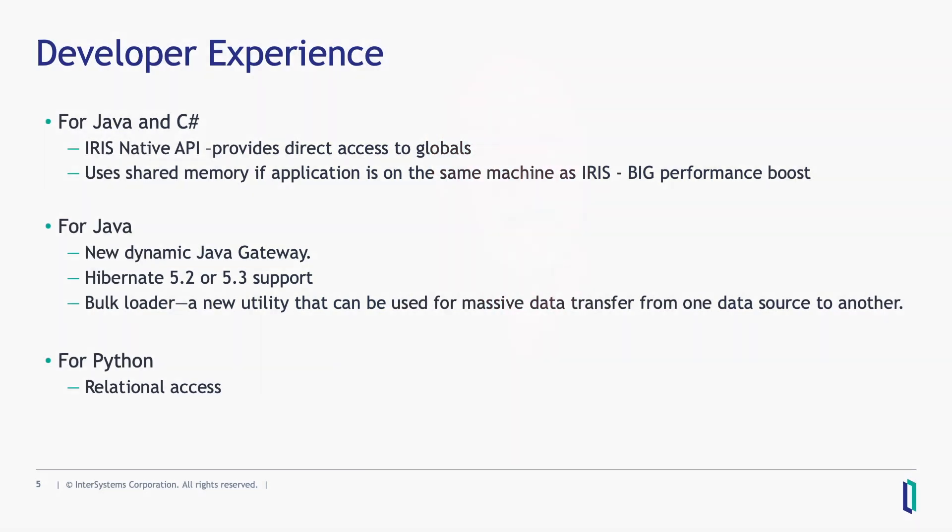Another big theme for InterSystems is ease of development. For version 2019.1, we added Java and C Sharp support, including an IRIS native API that allows direct access to globals. We also added relational access for Python. We did this with high performance — if you're running your Java or C Sharp code on the same machine as InterSystems IRIS, you can take advantage of shared memory to run your application much, much faster.